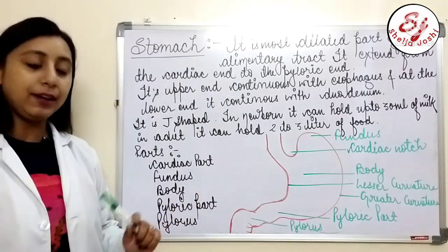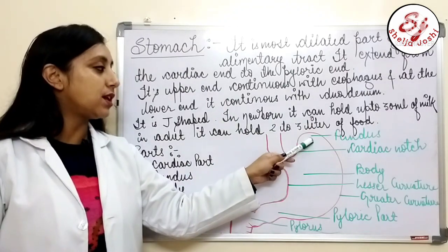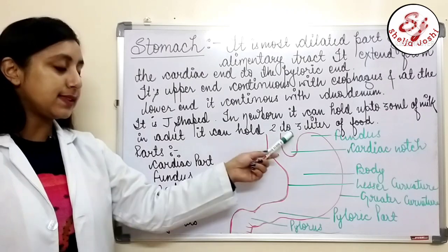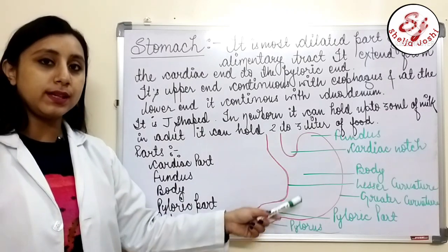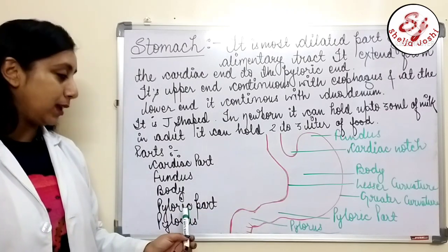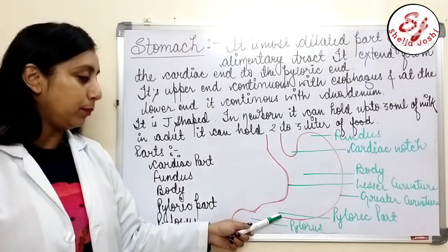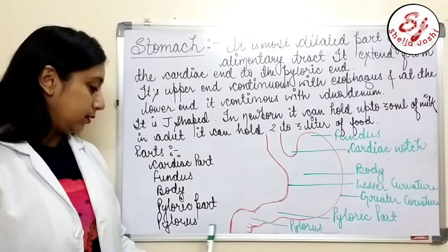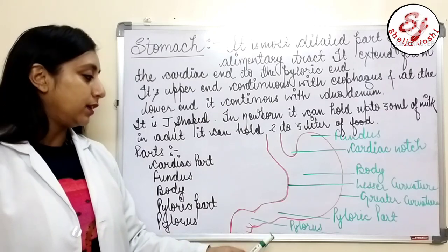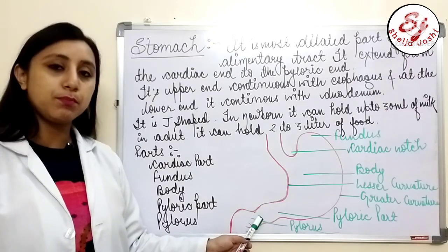After the cardiac part is the fundus. The upper portion of the stomach is known as the fundus. Next is the body — the center part is known as the body. Next is the pyloric part, which is the lower portion of the stomach. And finally, the pylorus is the middle and last narrowing part of the stomach.